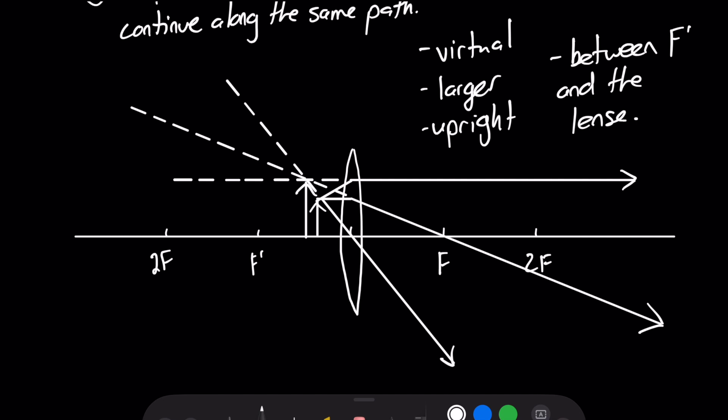So that is a quick review of how to draw a ray diagram for a converging lens when the object is in front of our secondary focal. I hope this video has helped.